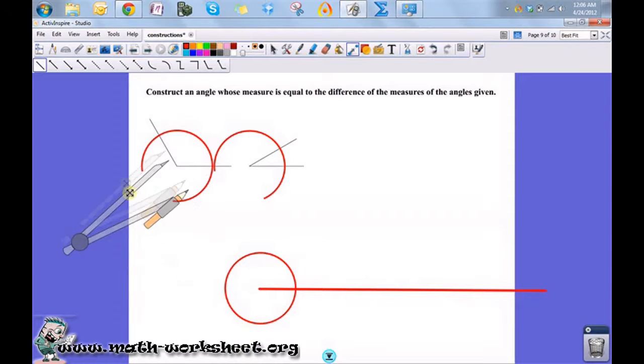So now what I want to do is measure this distance where the two points intersect, or the two points where this arc intersects this angle here. Let's open it up just a smidge more. Now I am going to draw an arc just to make sure that it does in fact intersect there, and it does.